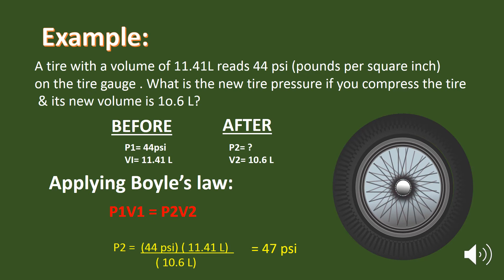By putting all these values, we get 47 psi. So the final pressure on the tire is 47 psi.